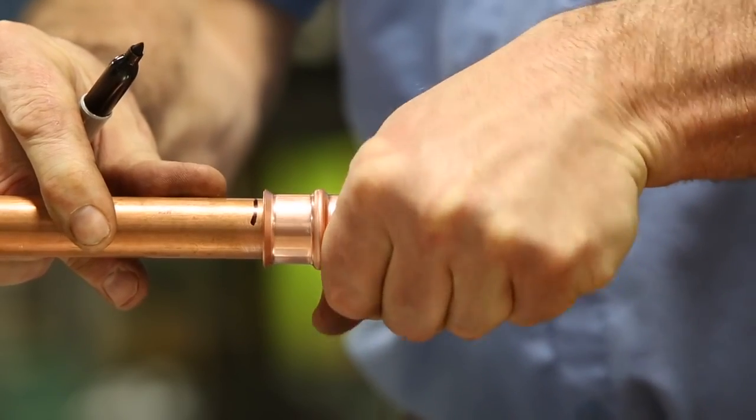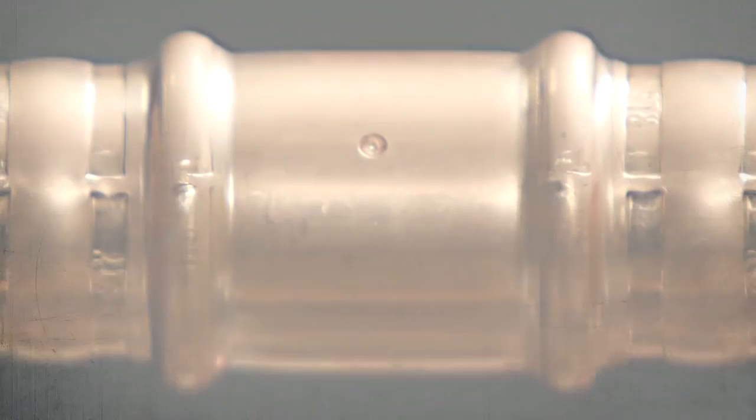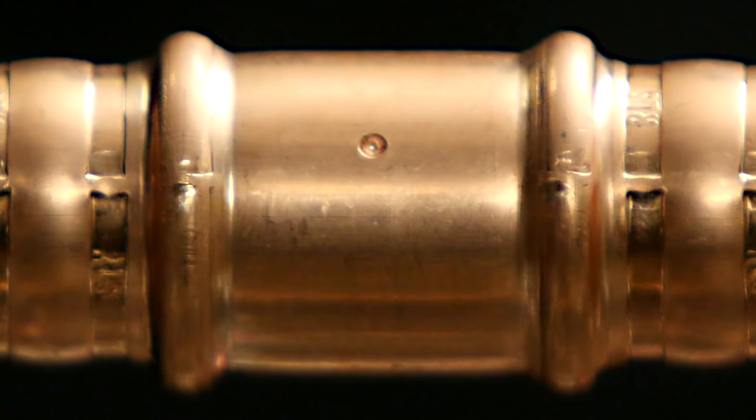Then just push the fitting onto the tube. A reference dimple in the ZoomLock fitting helps assure the right insertion depth and a secure fit.